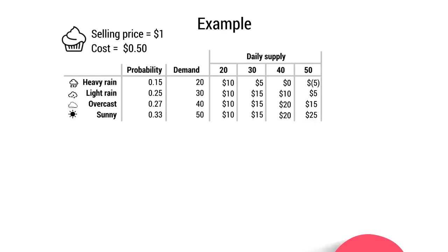So we can see that the payoff table illustrates the different levels of profit that occur at different situations when different choices are made. She can look at the table and think: what happens if it's overcast and I produce 30? — $15 profit. What if it's heavy rain and I've produced 40? — I'll break even. Now we need to look at how risk appetite will affect the decision that is made.